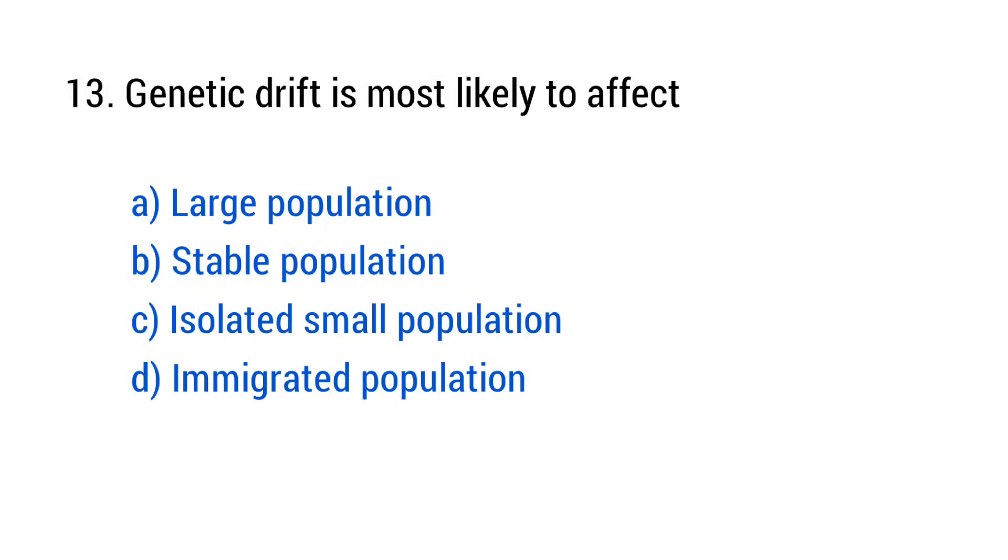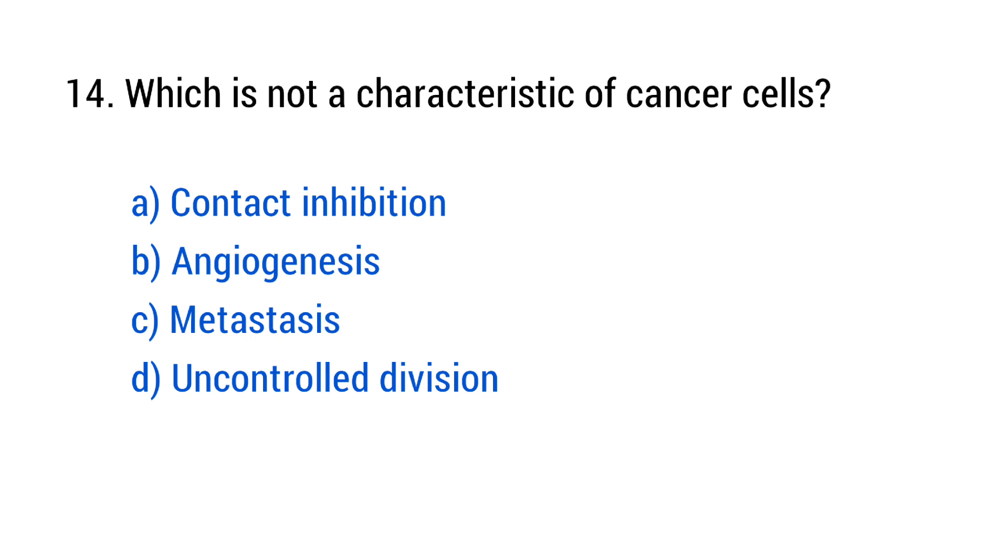Question number 13. Genetic drift is most likely to affect? The right answer is option C, isolated small population. Question number 14. Which is not a characteristic of cancer cells? The right answer is option A, contact inhibition.